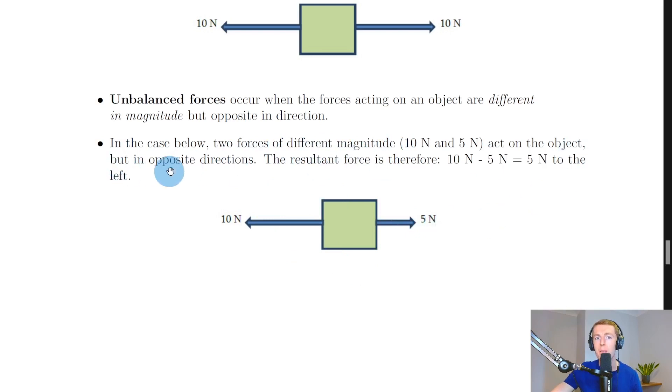That means the resultant force is going to be 10 newtons to the left minus the 5 newtons to the right, which gives us 5 newtons to the left. So the object is going to move to the left in this case, or accelerate to the left. And I'm just going to show you a quick simulation to help you understand this.